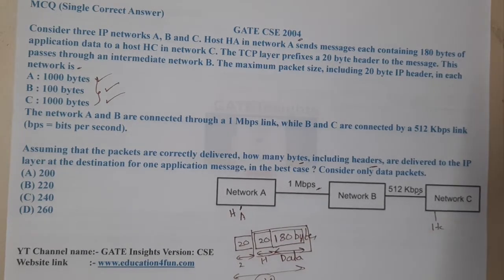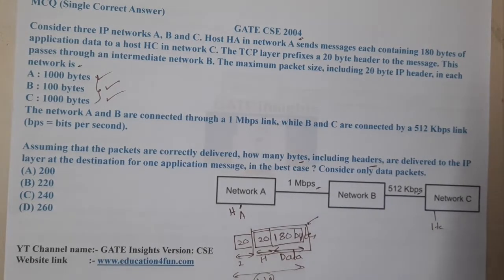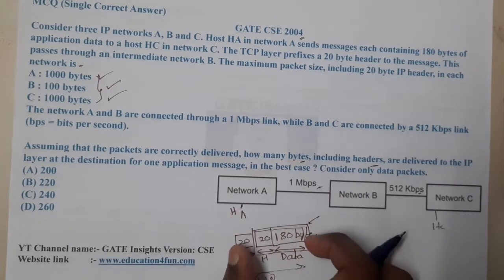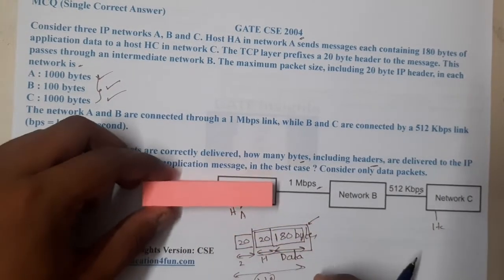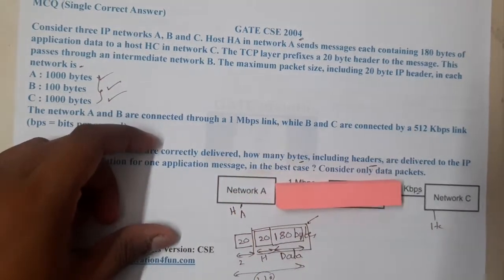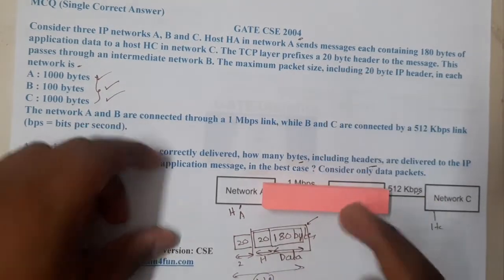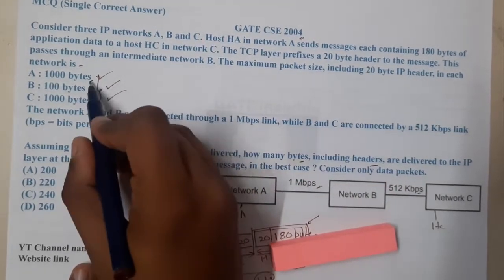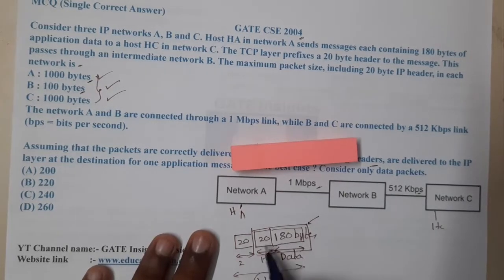The 20 bytes is the additional TCP header charge, but this whole packet cannot be sent in one single shot. The packet starts in network A and goes easily since the speed is 1 Mbps, but at network B it becomes 512 kbps so we need to break the packet. Also, network A can send 1000 bytes whereas network B can send only 100 bytes. So the 220-byte packet including headers must be fragmented.